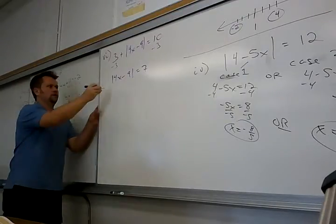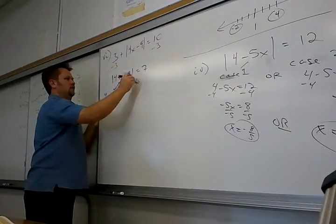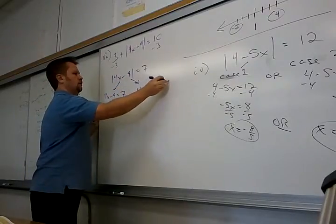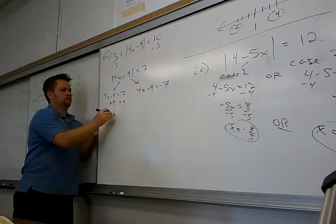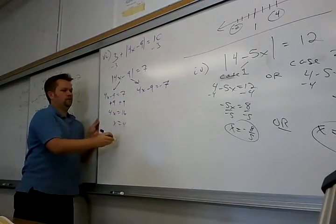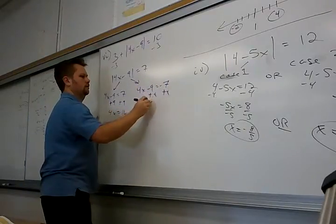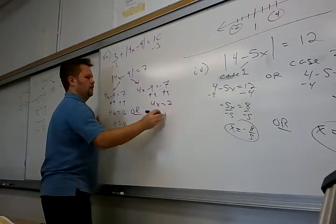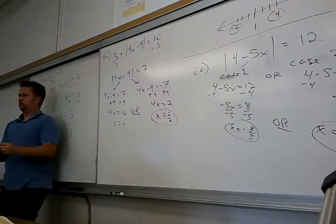So here I've got to subtract the 3 first. Get your absolute value by itself first where the variable is stuck. Get it by itself first and then you can do your whole cases. 7 or minus 7. So either this is 7 or this minus 7. So add 9, x is 4 or add 9, x is 1 half. Sweet.